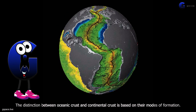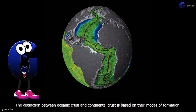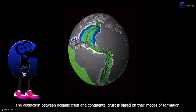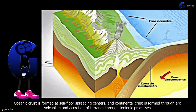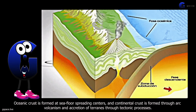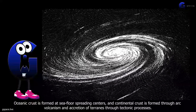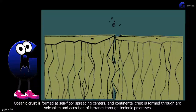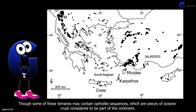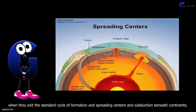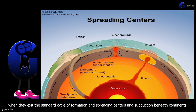The distinction between oceanic crust and continental crust is based on their modes of formation. Oceanic crust is formed at seafloor spreading centers, and continental crust is formed through arc volcanism and accretion of terrains through tectonic processes, though some of these terrains may contain ophiolite sequences, which are pieces of oceanic crust considered to be part of the continent when they exit the standard cycle of formation at spreading centers and subduction beneath continents.